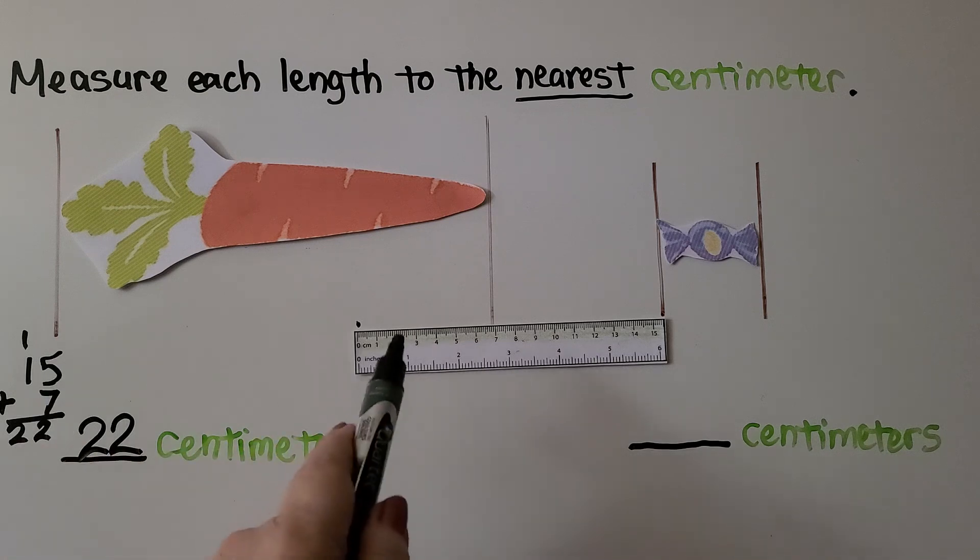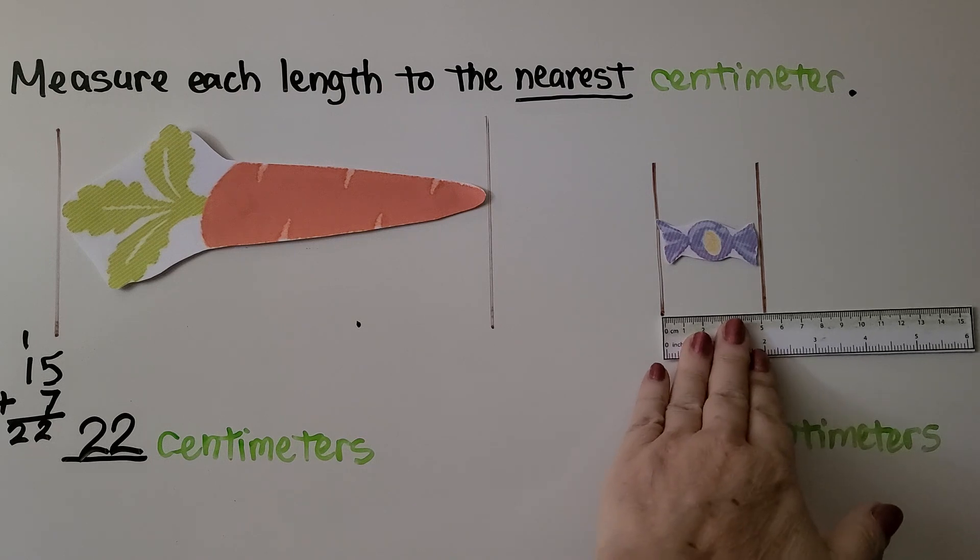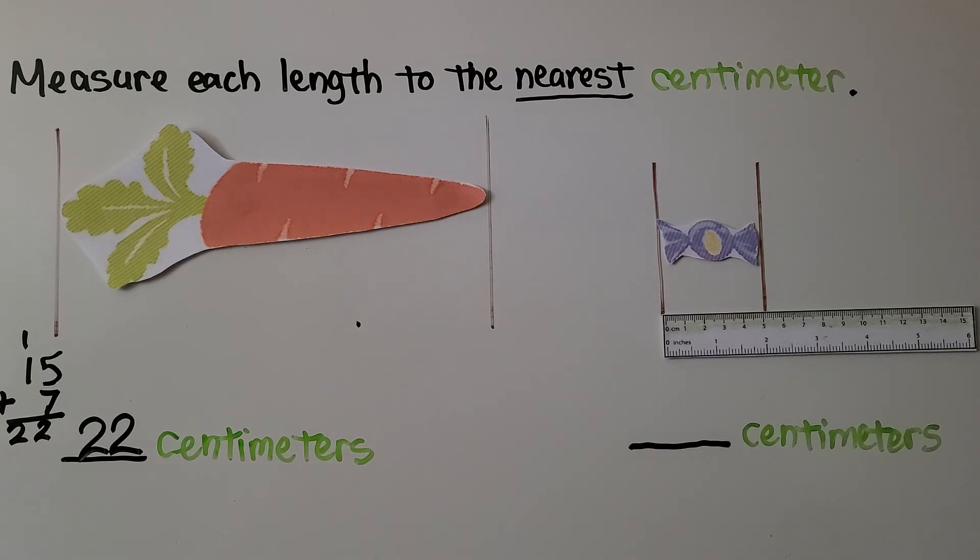We can measure this little piece of candy. We line it up with the zero mark, and to the nearest centimeter it's at 5.